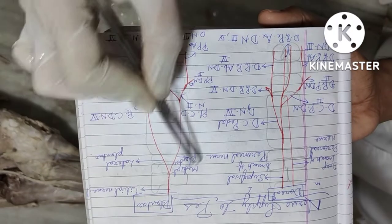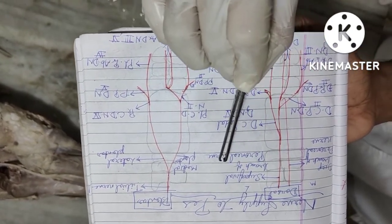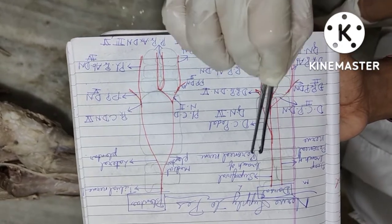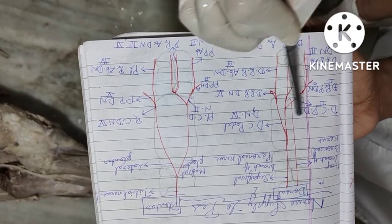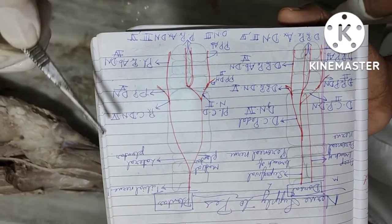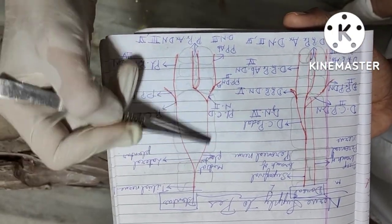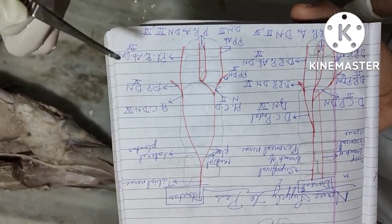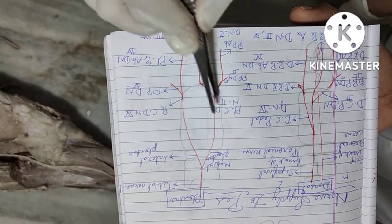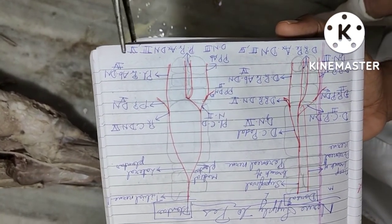On the dorsal aspect of the hind limb, the superficial and deep branches of the peroneal nerve form common and proper digital nerves. On the plantar aspect, it is only the tibial nerve, which divides into the medial plantar and lateral plantar nerves, giving rise to the common and proper nerves of the plantar aspect of the hind limb.